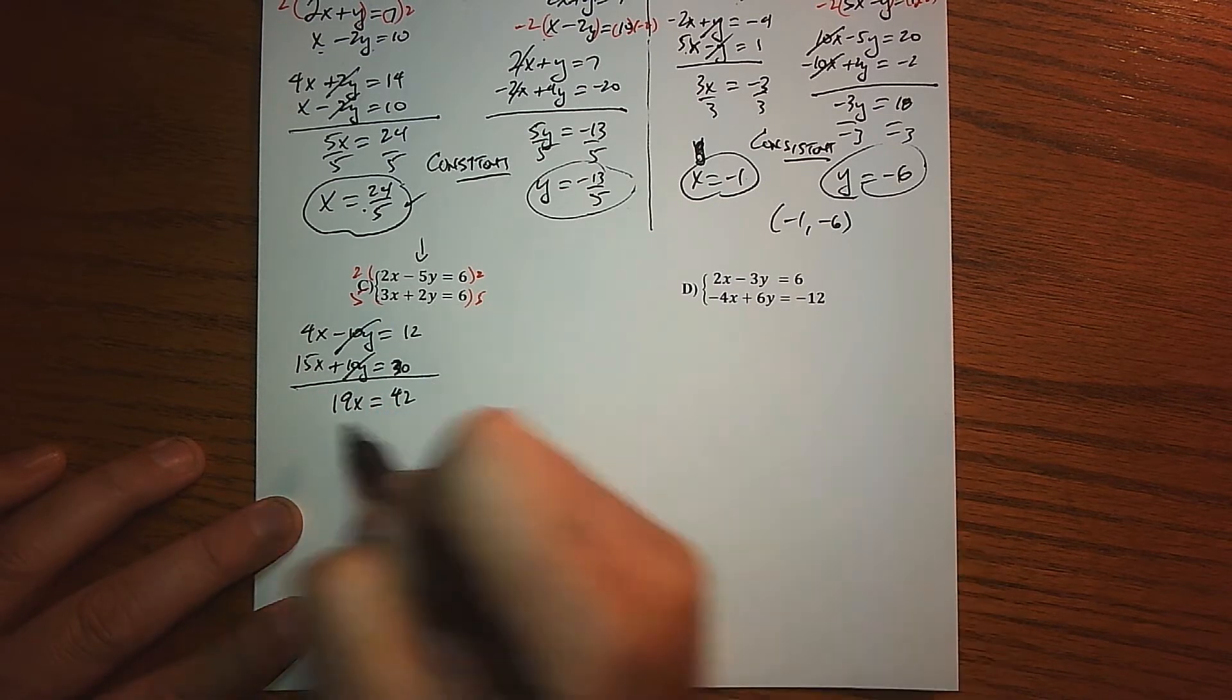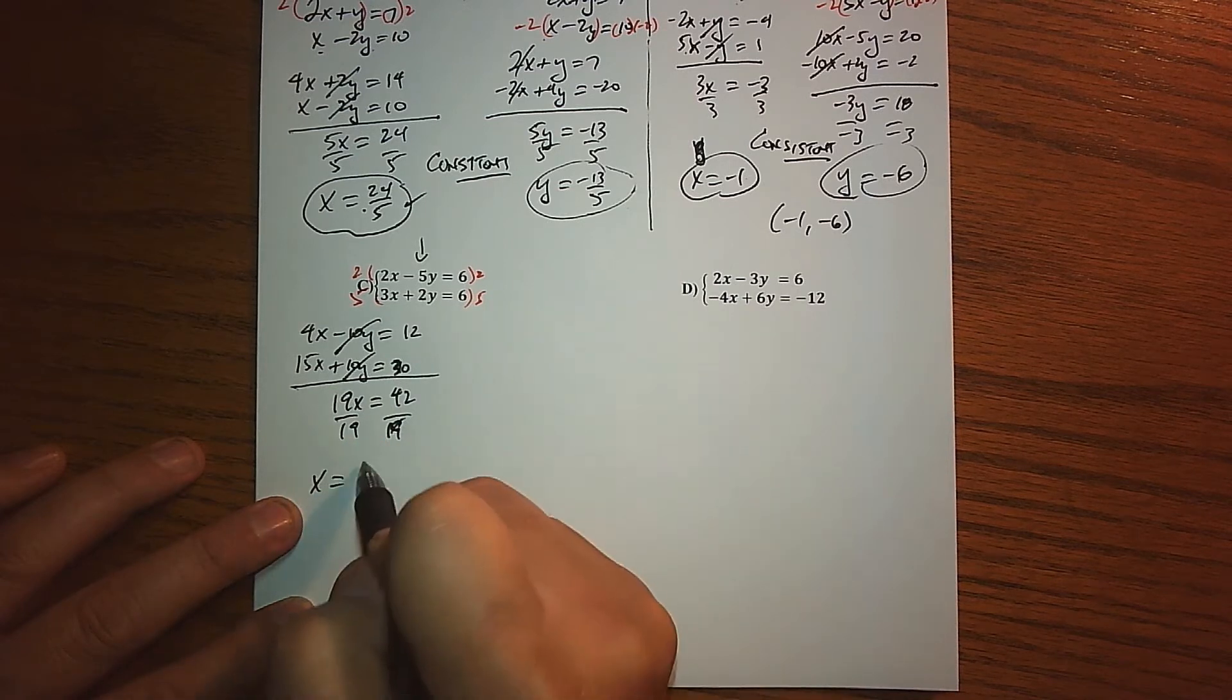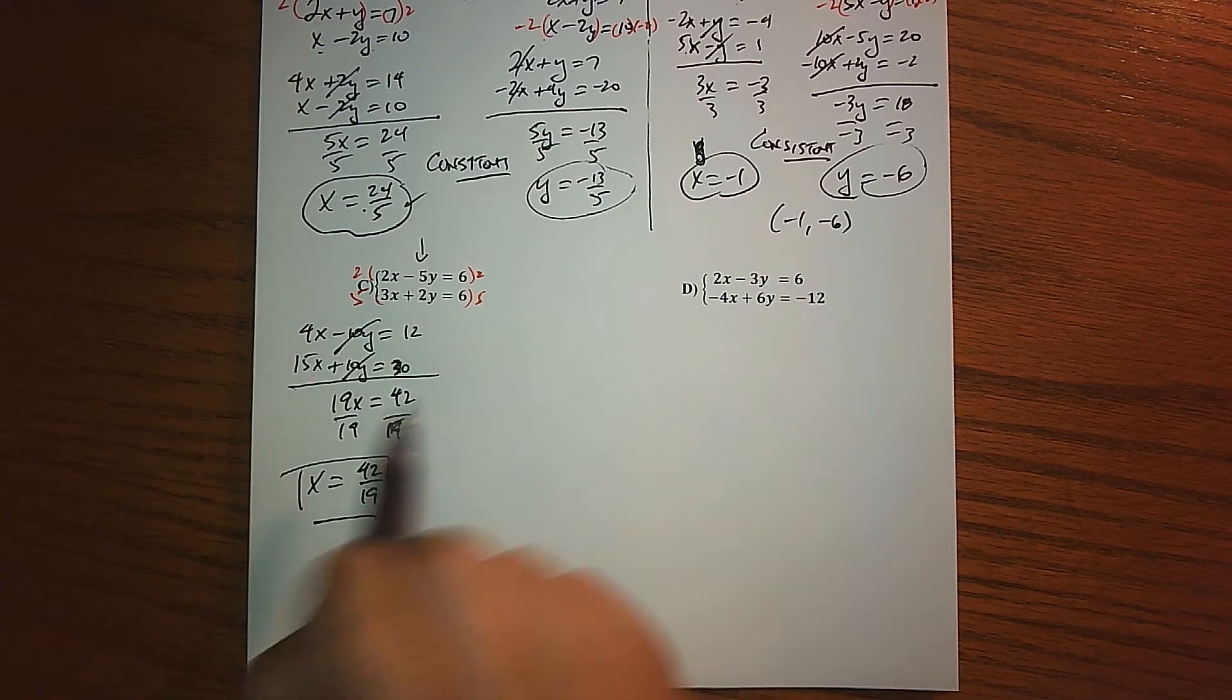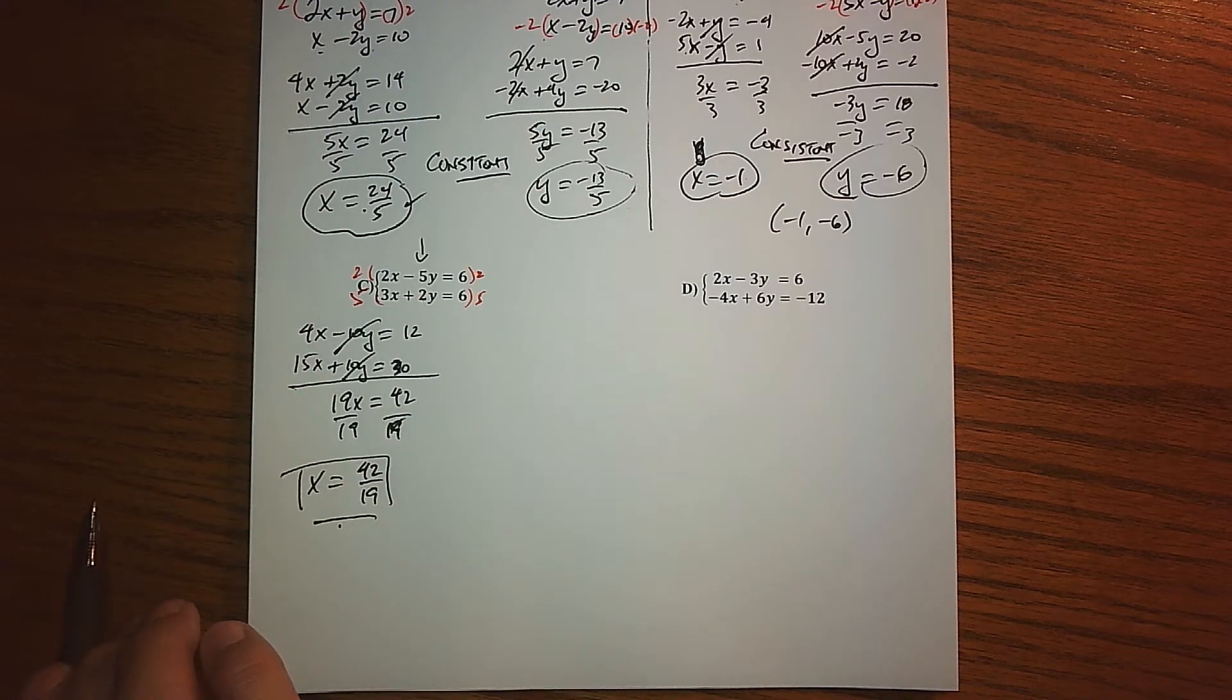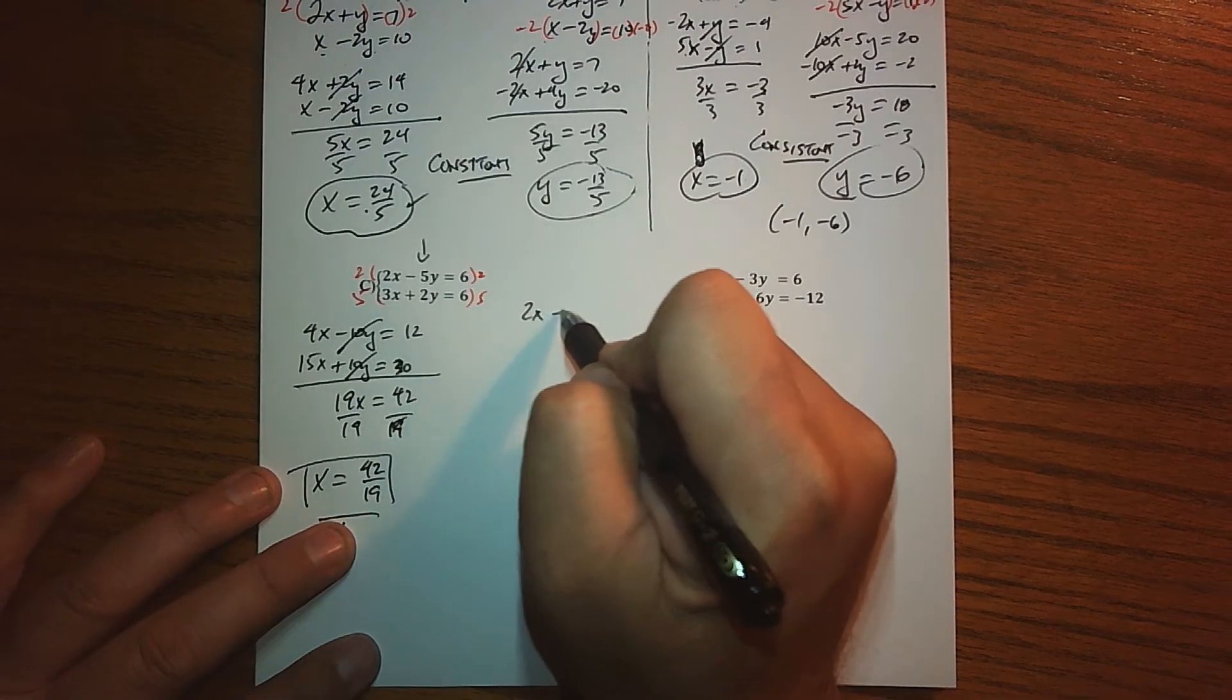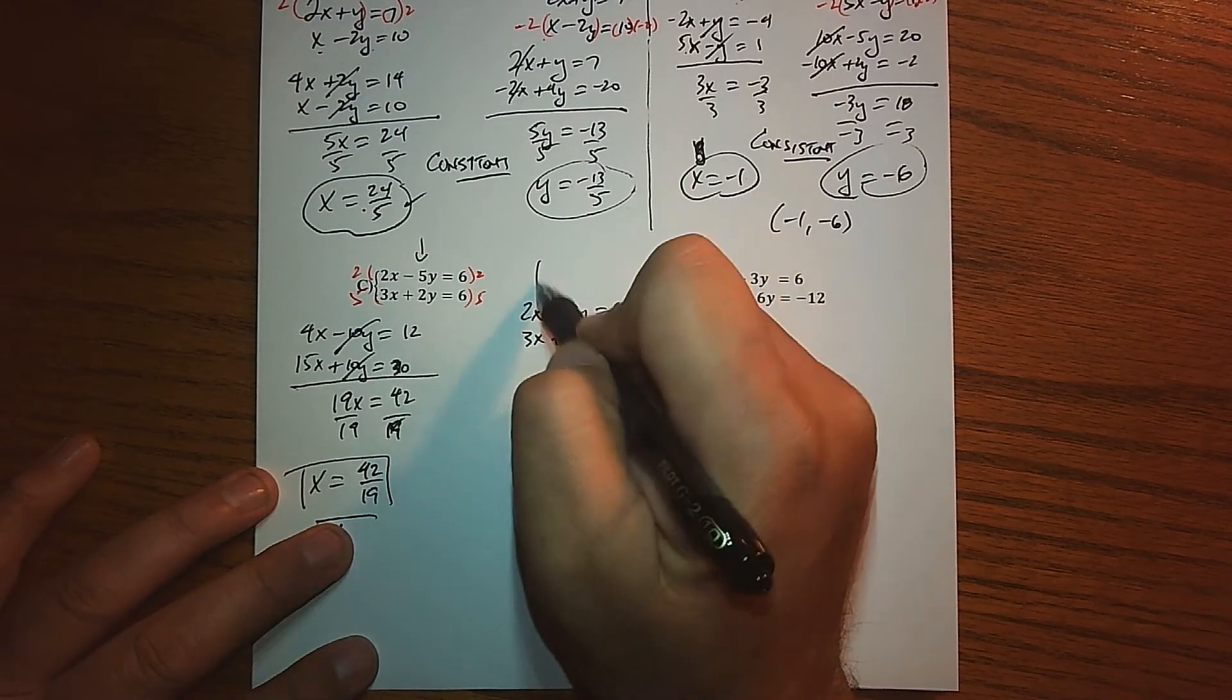When we're said and done here, the Y's cancel out like I designed them to. 4x and 15x is 19x, and 12 and 30 gives us 42. Dividing by 19, we get a very nasty value of 42 over 19. Trust me, you don't want to take that value and go plug it back in there to find Y.